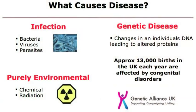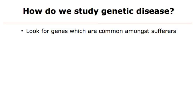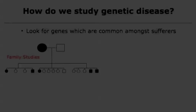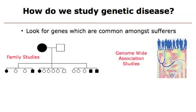The Genetic Alliance in the UK estimates that 13,000 births in the UK each year are affected by a congenital disorder. So how do we study genetic disease? You can look in the population for a common gene that the sufferers share. The easiest way of doing this is in family studies, who are most genetically alike. In recent years, there's been a huge burst in something called genome-wide association studies.